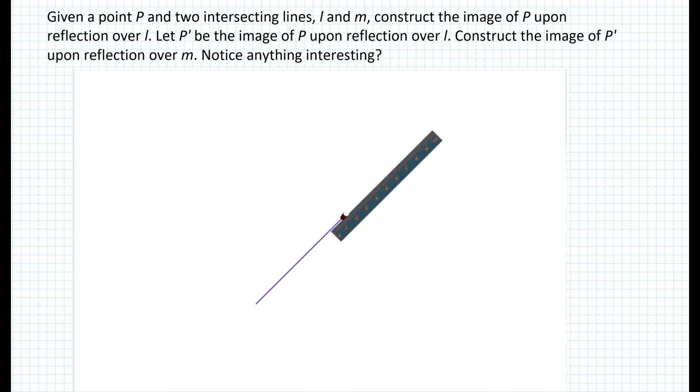So here's the construction. First, you construct line L. Then you construct a random line M such they both intersect. And then we label somewhere a point P. Now, in order to construct the reflection of P under line L, we need to make sure that line L is the perpendicular bisector of the segment from P to P prime. So we first construct a perpendicular from point P to line L, as you can see here.